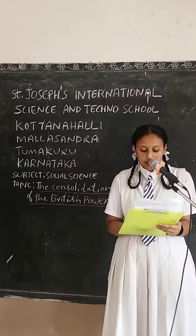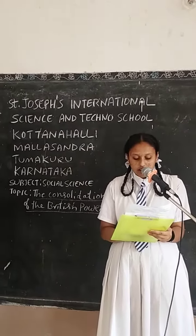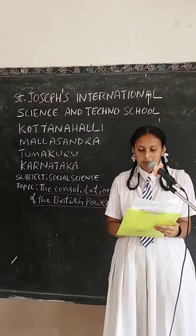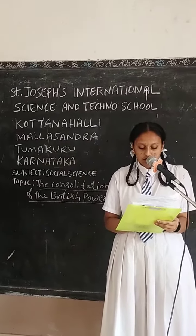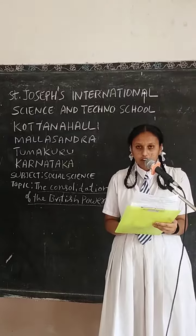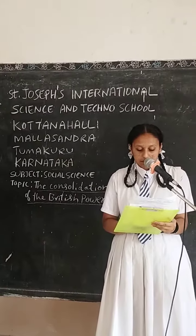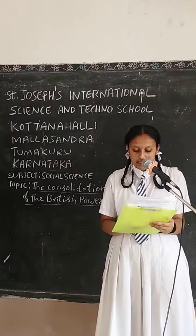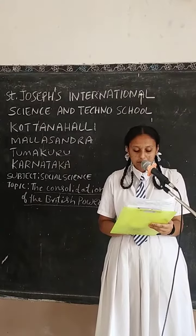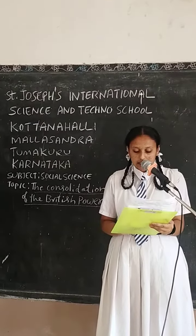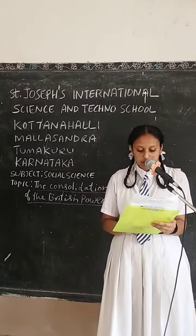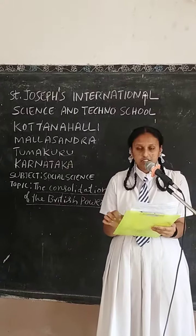In 1848, the Sikh opposed the direct rule of British in Punjab. Many opposition was led by the people of Lahore and Multan. But again, the people of Punjab were defeated. Finally, Lord Dalhousie merged Punjab with the British Empire.